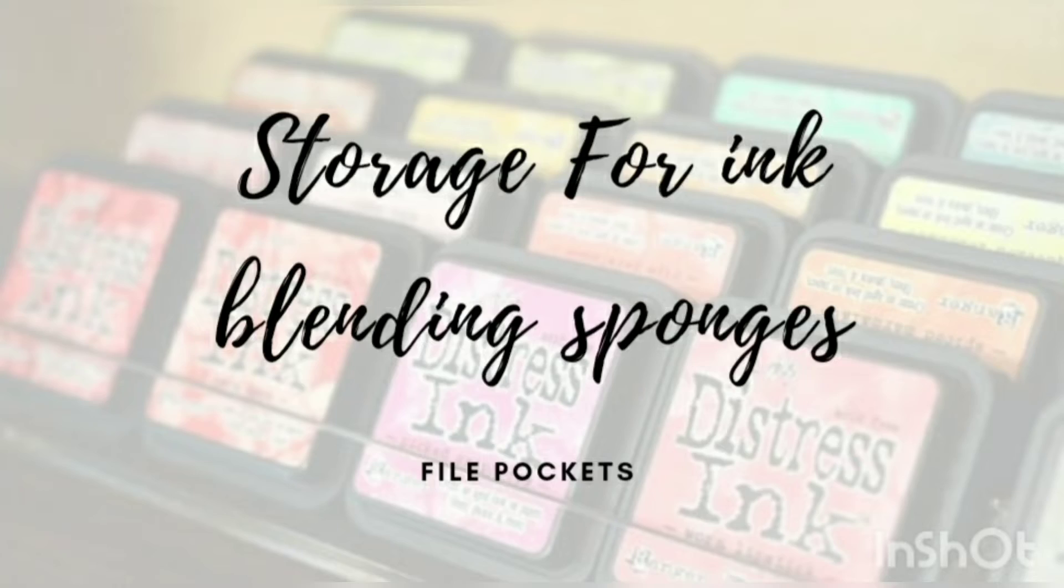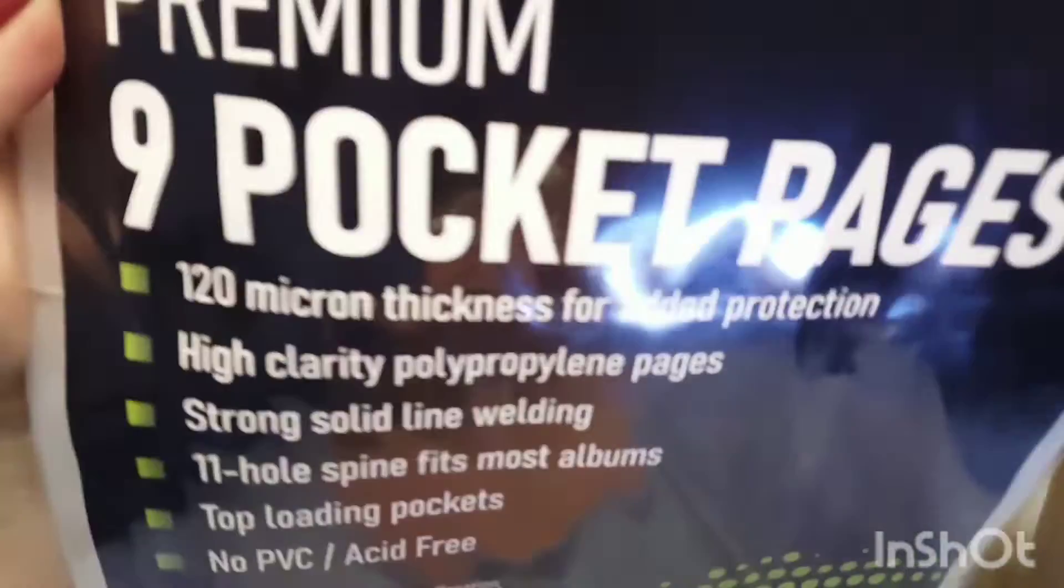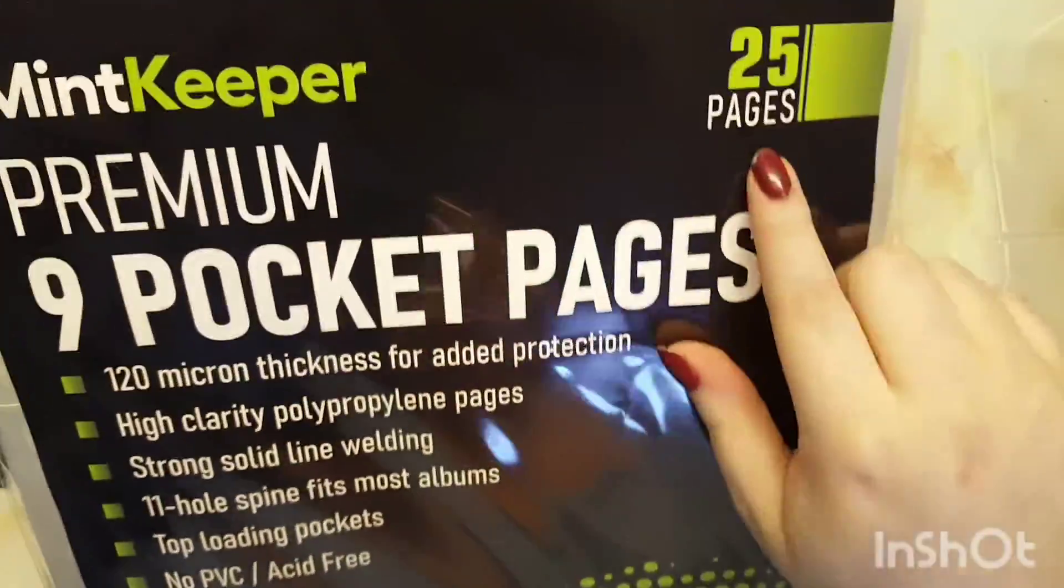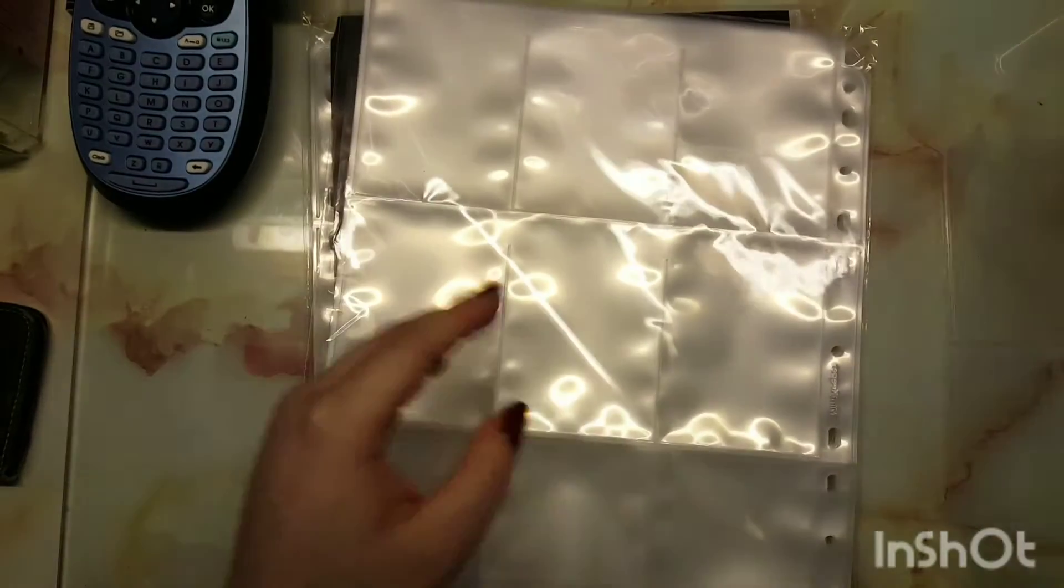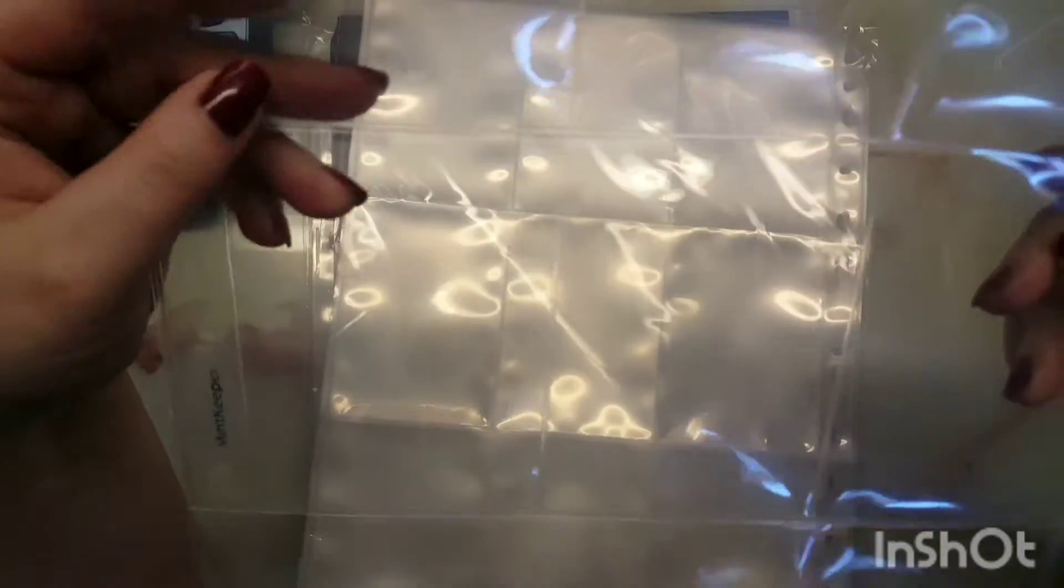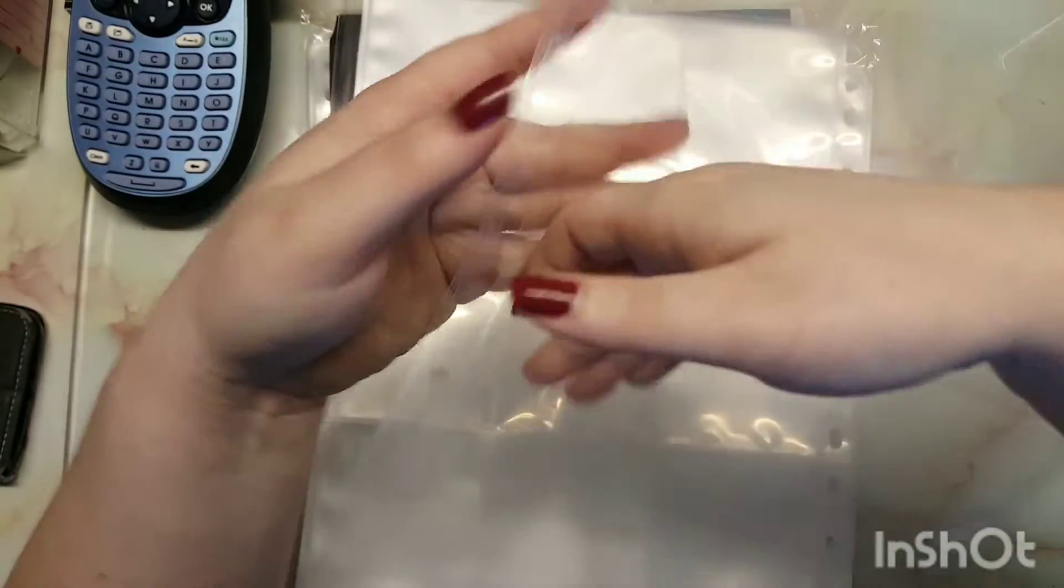Hey guys, welcome back to my channel and welcome if you are new. Today I'm going to show you some storage ideas for your sponges and ink blending tools if you don't have much space in your craft room. I'm taking these pocket organizers, which are actually for cards and stuff, so you get nine pockets in total.